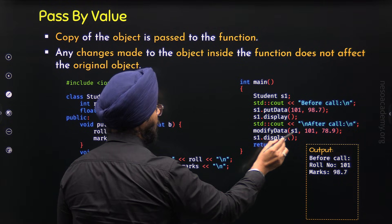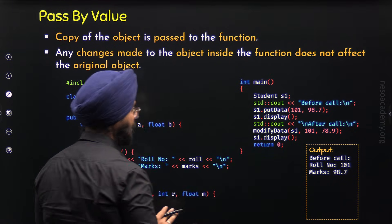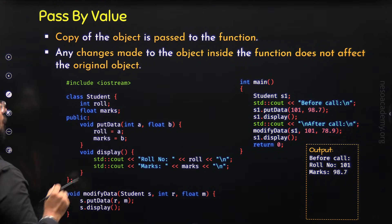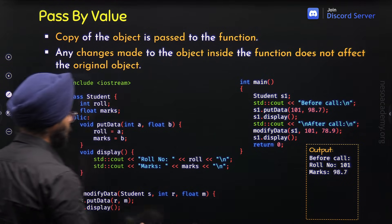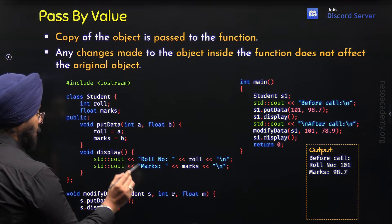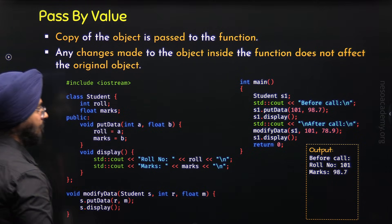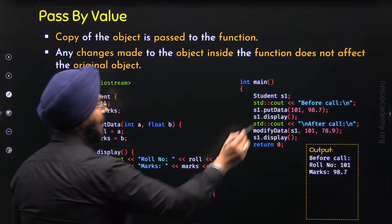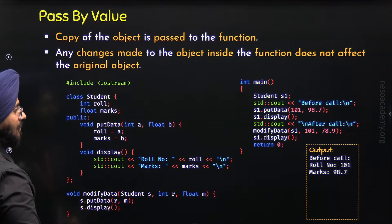Now, let's call the modifyData function and pass the S1 object. Here I am passing the name of the object, which means we are passing it by value — a copy of the object will be passed, not the original object. So we are passing the copy of S1 to parameter S. When we call display through S, we will receive role number 101 and marks 98.7, because S received the copy of S1.